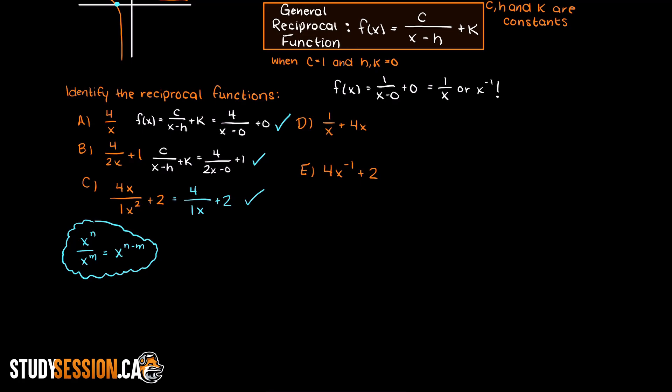Now in example d we have two independent variable terms present and this 4x is clearly not a constant value as it has an input. Therefore we cannot manipulate this equation any way to make it fit our reciprocal function. And therefore we can say that d is not a reciprocal function.